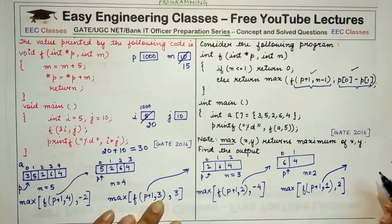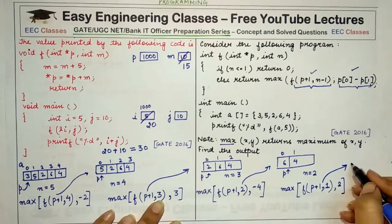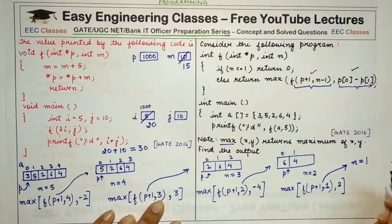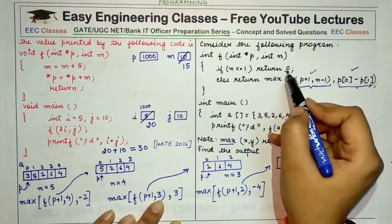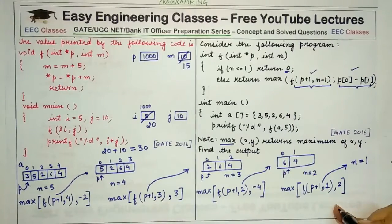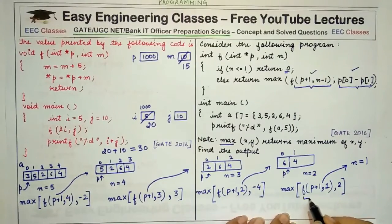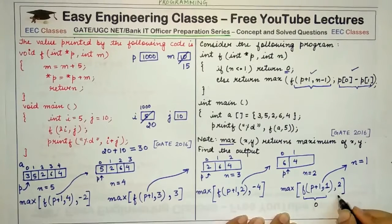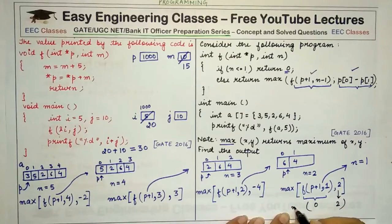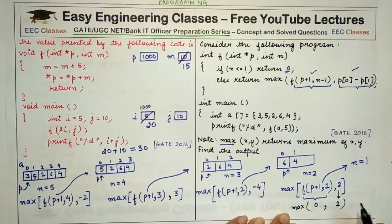When this innermost function call is made, n equals 1, so we return 0. The first value returned is 0. So this recursive expression returns 0, and the second expression is 2. We find the max of 0 and 2, which is 2.